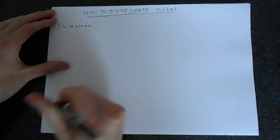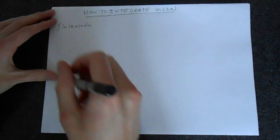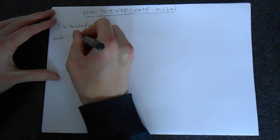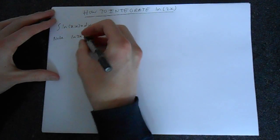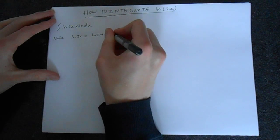Hence, we can integrate this by parts, and therein is the first trick. But we can also note that ln2x can be broken down into ln2 plus lnx.